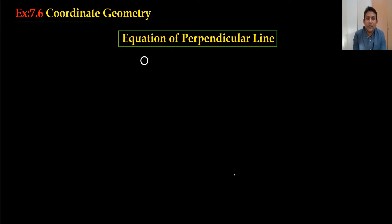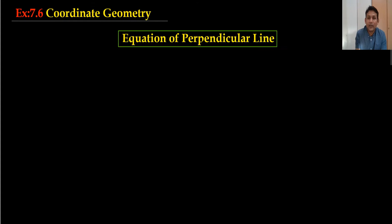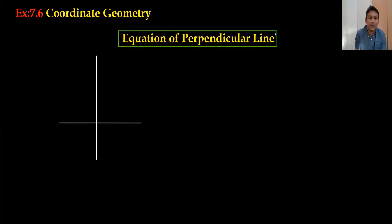Today we are doing the equation of perpendicular lines. For perpendicular lines, we need to know the gradient of the perpendicular lines. Perpendicular means the angle between two lines when they intersect is always 90 degrees. This is gradient 1 (m1) and this is gradient 2 (m2).